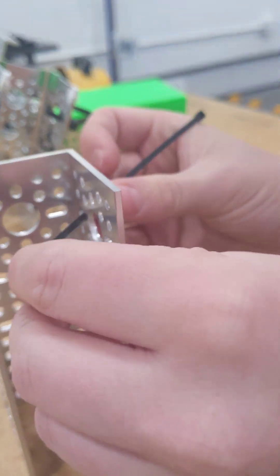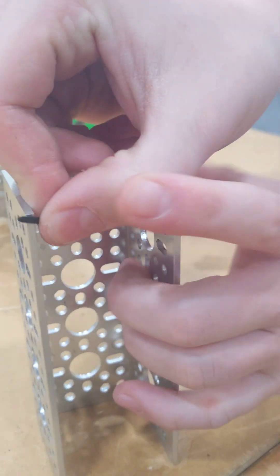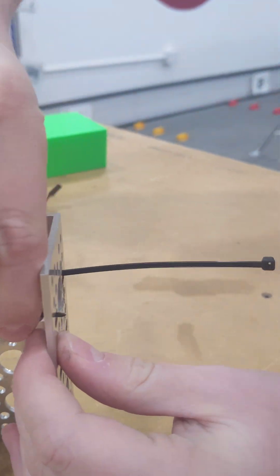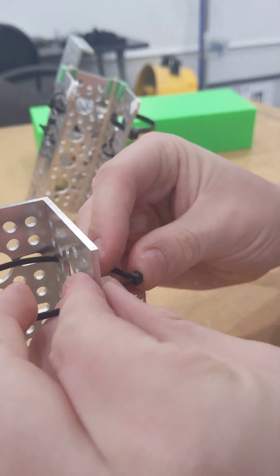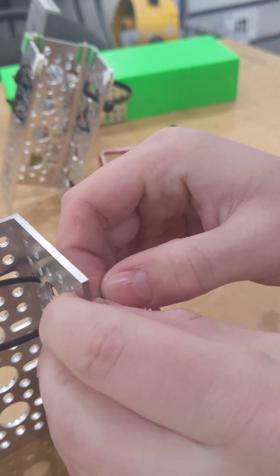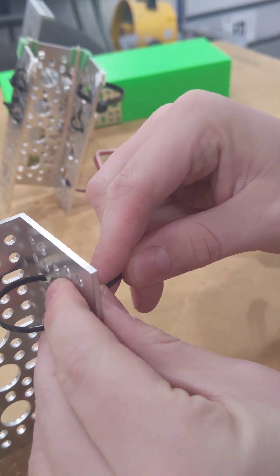Next what you want to do is just thread in the zip tie like this and loop it back around.